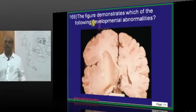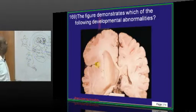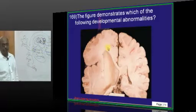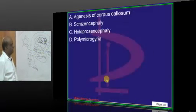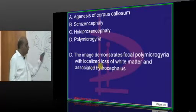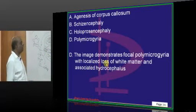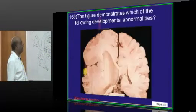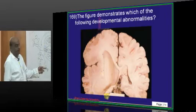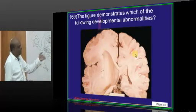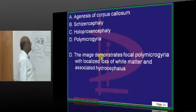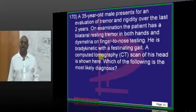A figure is demonstrating developmental abnormalities. Typically there is focal polymicrogyria with loss of white matter and hydrocephalus. The gyri are lost, hydrocephalus is present, and white matter is decreased compared to the other side. This is an example of polymicrogyria.